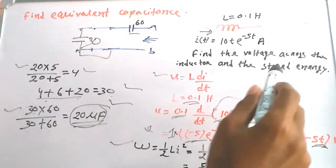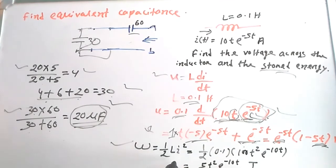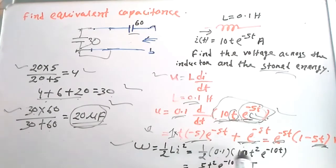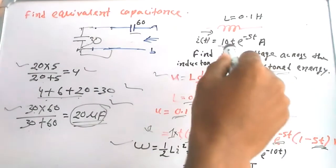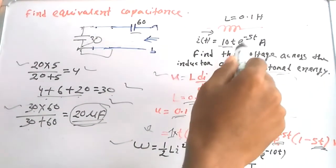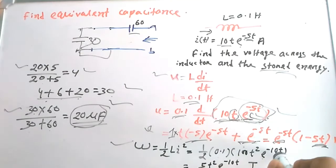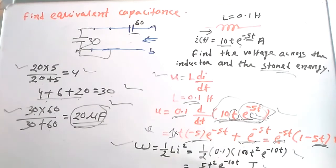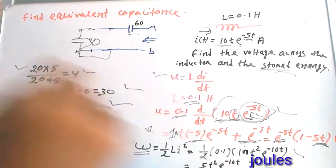The stored energy can be calculated as W = ½ L i². With L = 0.1 H and i = 10t · e^(−5t), i² = 100t² · e^(−10t). So W = ½ × 0.1 × 100t² · e^(−10t) = 5t² · e^(−10t) joules.